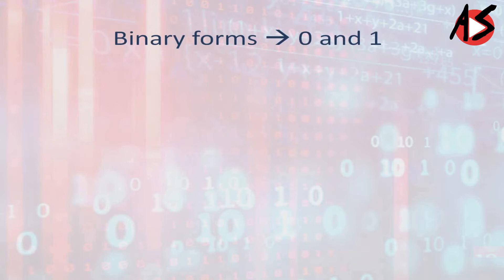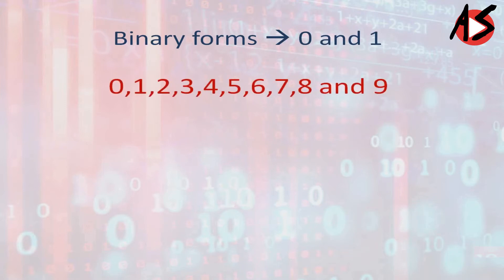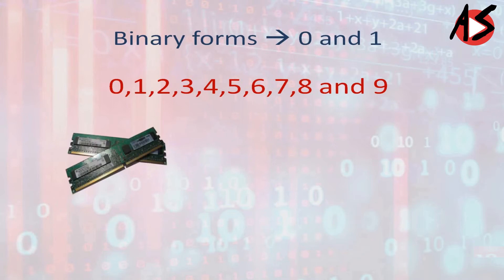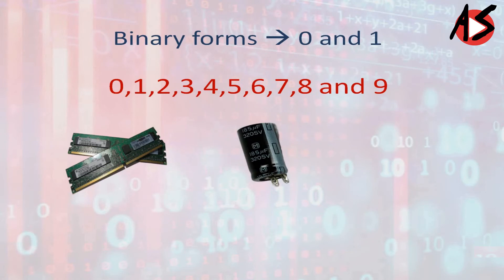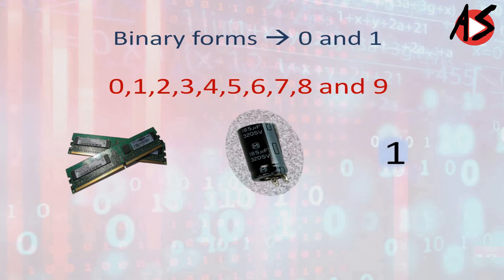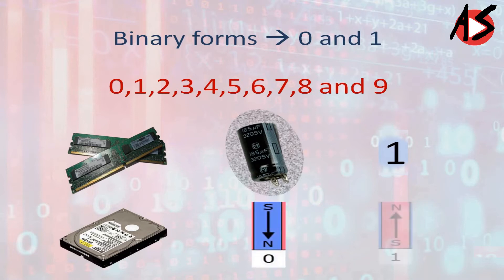The computer stores everything in binary form — zeros and ones — because to store a decimal number we require ten states: zero through nine. That is difficult to implement accurately at the hardware level. But two states is easy to implement. For example, primary memory — RAM — has two states: a capacitor in discharged state is zero, and when charged with electrons it's one. Secondary memory like a hard drive also has two states: demagnetized is zero, and magnetized is one. This is efficient implementation.